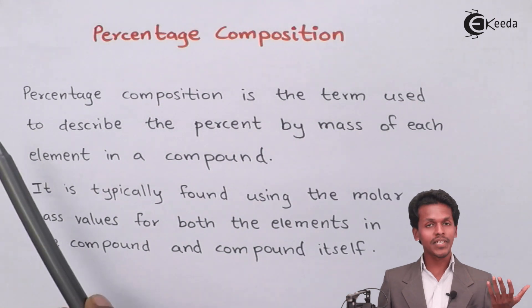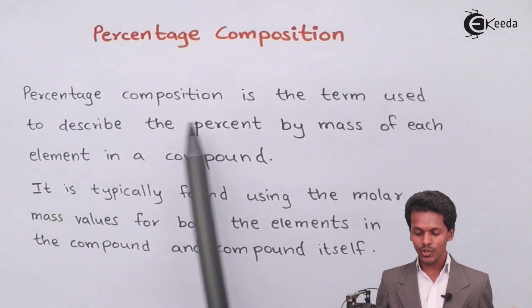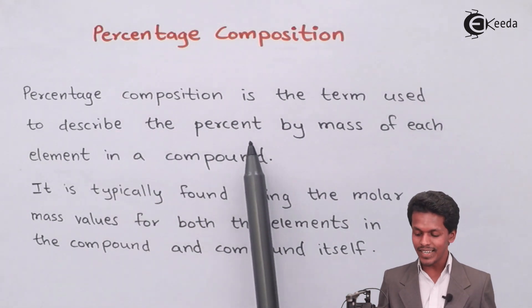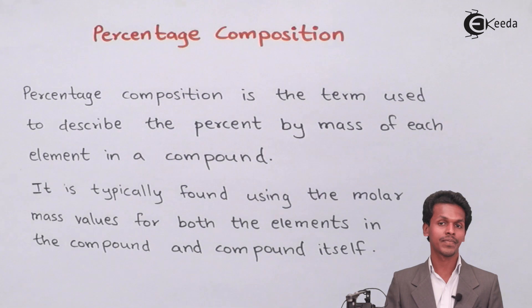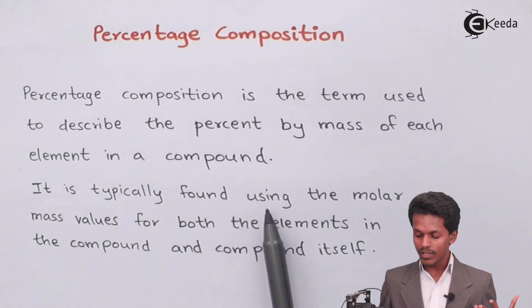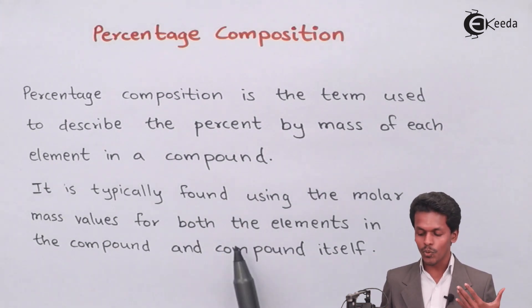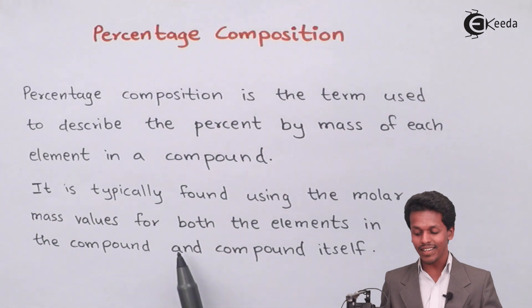Percentage composition is the term used to describe the percentage by mass of each element present in a compound. It is typically found using the molar mass value for both the elements in the compound and the compound itself.